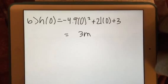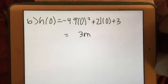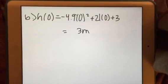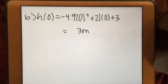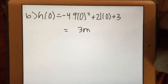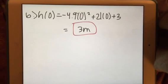Part b asks us to find the starting position. We use the position equation they originally gave us and plug in 0 for t, because to find the starting position, we need the height at time 0 when it starts. So plugging in 0: h(0) = -4.9(0)² + 21(0) + 3 = 3 meters.